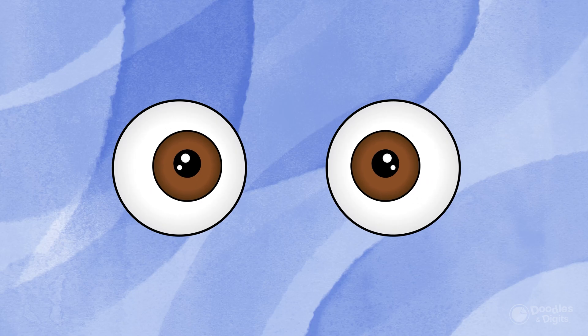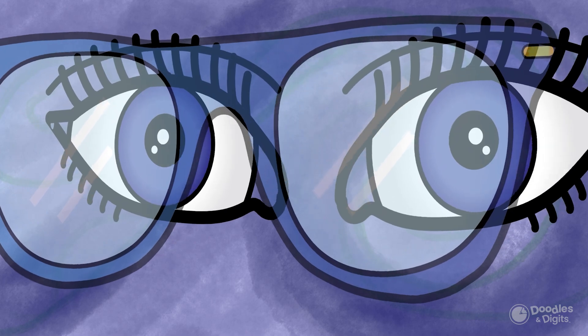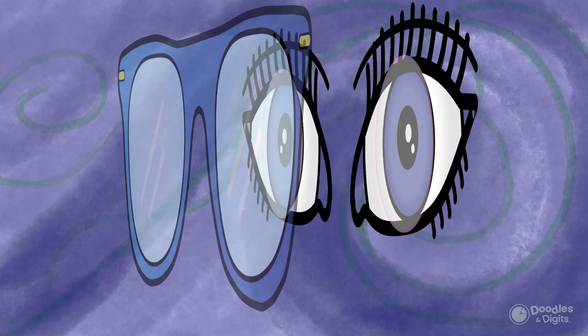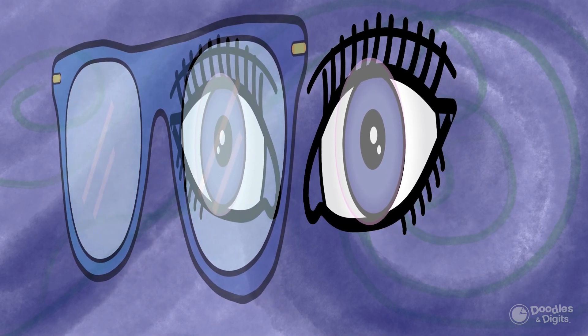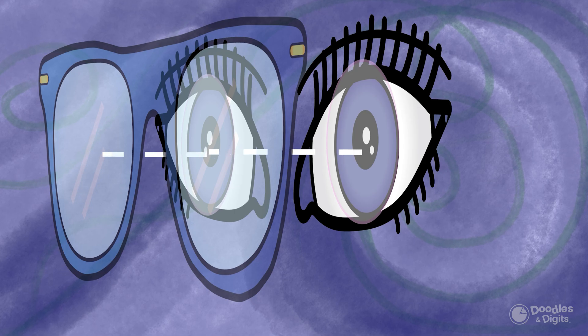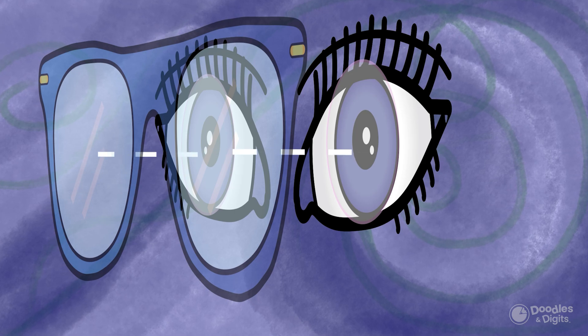We use math when we are calculating contact lens prescriptions through something called vertexing. Your glasses sit off of your eyeballs, right? Your glasses sit on your nose so there's a distance between the glasses and your eyes, whereas a contact lens sits directly on the eye itself. Because of that change in the distance, it can actually change the power that you need to see clearly. So I have to use math when I am prescribing a contact lens prescription based off of a glasses prescription.